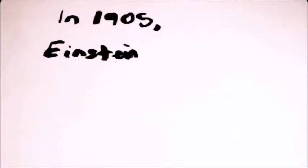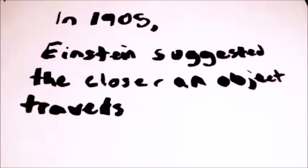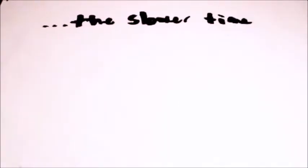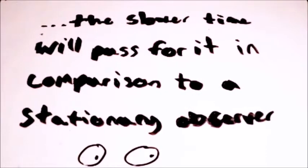In 1905, Einstein suggested that the closer an object travels to the speed of light, the slower time will pass for it in comparison to a stationary observer.